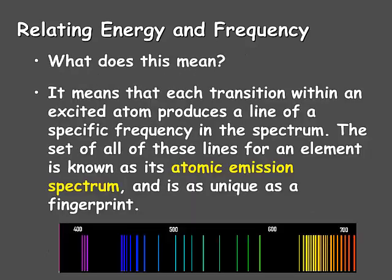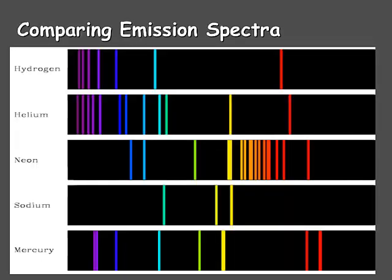So, what does this equation actually mean? It tells us that each transition within an excited atom produces a line of a specific frequency in the spectrum. Electrons jump out to higher energy levels, and as they fall back, the amount of their fallback corresponds to a particular frequency in the spectrum. The set of all these lines for an element is known as its atomic emission spectrum, and it's just as unique as a fingerprint. Each emission spectrum is definitely different from the others, though they may share some lines in common — the entire set of lines is unique for each element.